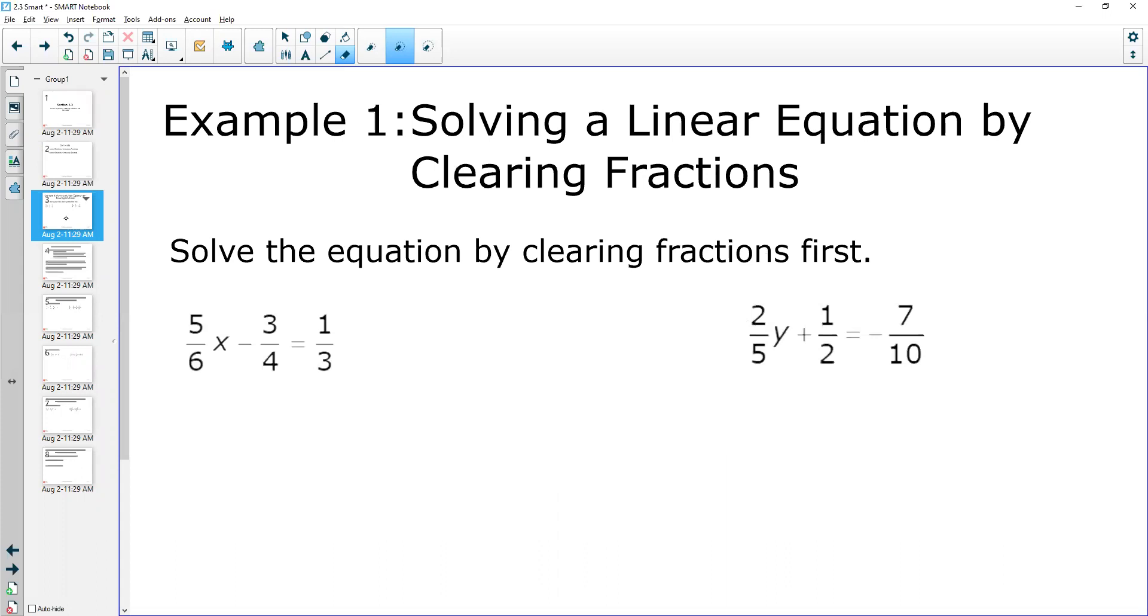So the way we go about clearing fractions out of an equation when it looks like this, like this number one over here, is what we're going to do is we're going to get rid of the fractions by using the common denominator, the least common denominator of all the fractions. So I have sixths, I have fourths, and I have thirds. The common denominator is something I can multiply each of them by and get to. It's a multiple of each. So like in this case, it would be 12.